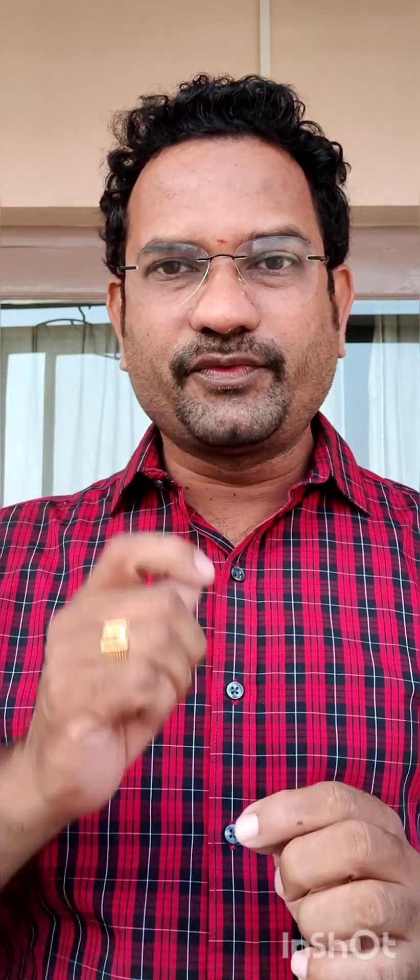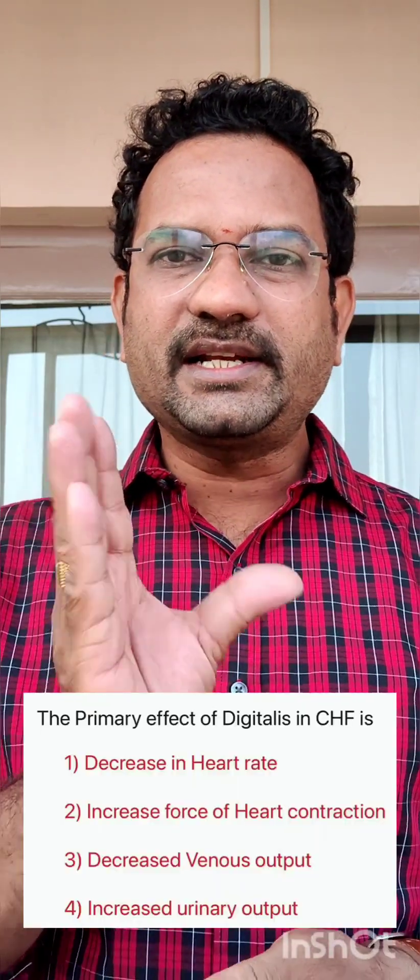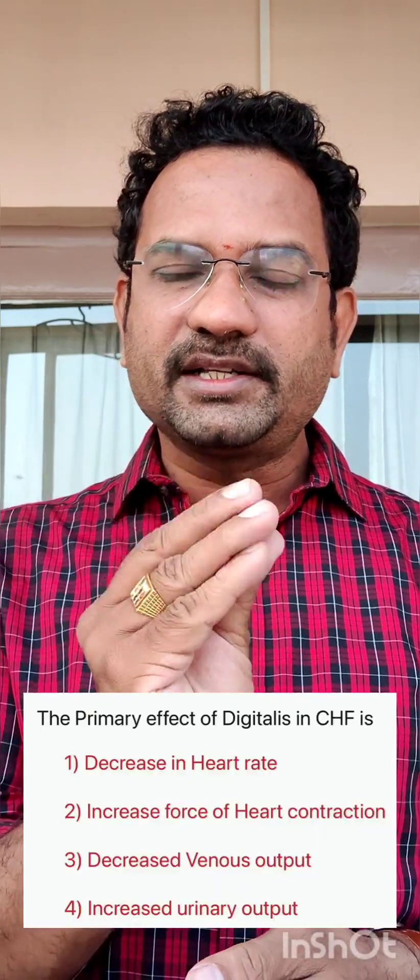Among the options, option two says increased force of myocardial contraction — that means positive inotropic effect. This is the primary action of digitalis glycoside. Option one says decreased heart rate, which is related to chronotropic activity.